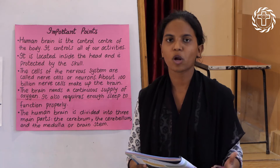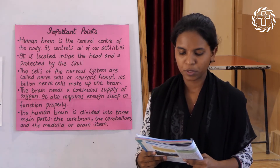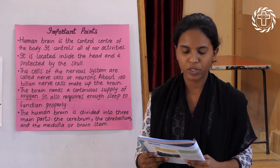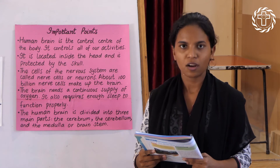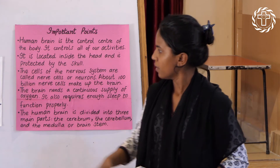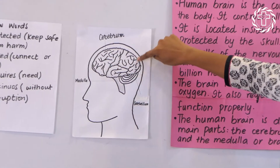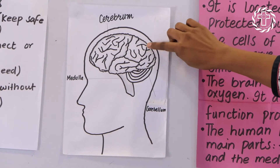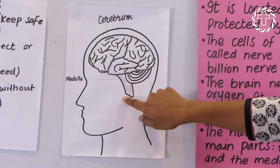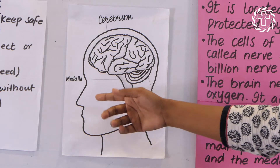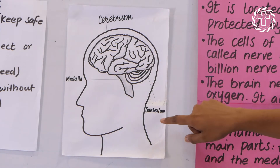The human brain is divided into three main parts: the cerebrum, the cerebellum, and the medulla or brain stem. The upper part and the largest part of the brain is called the cerebrum. This part of the brain is called the medulla or brain stem, and this part is called the cerebellum.